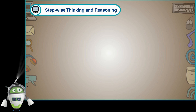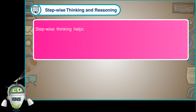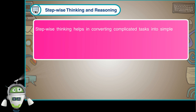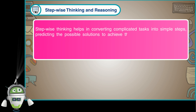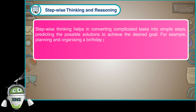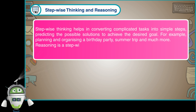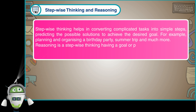Step-wise thinking helps in converting complicated tasks into simple steps, predicting the possible solutions to achieve the desired goal. For example, planning and organizing a birthday party, a summer trip, and much more. Reasoning is step-wise thinking having a goal or purpose in the mind.